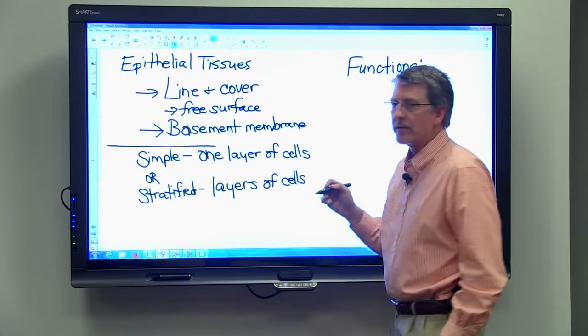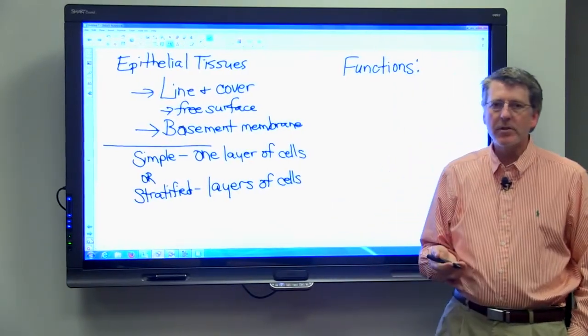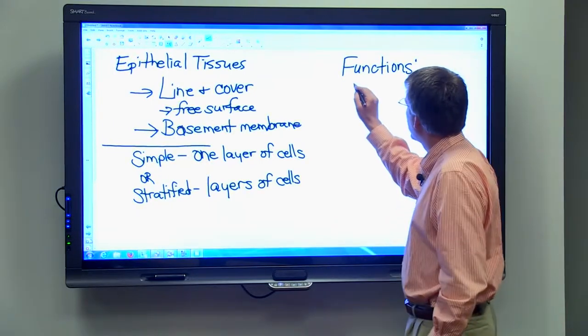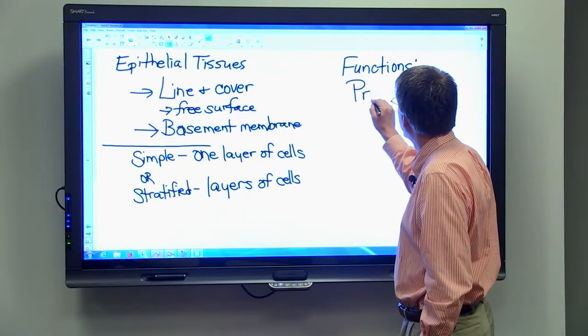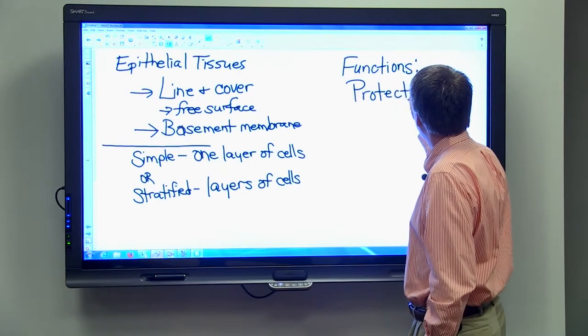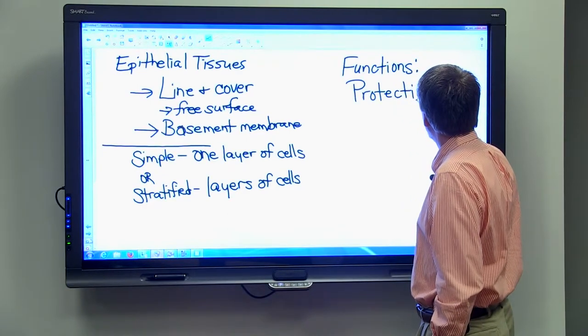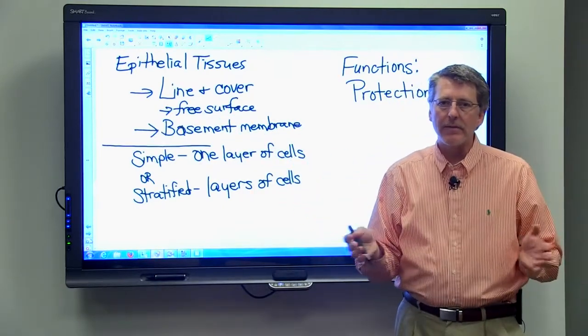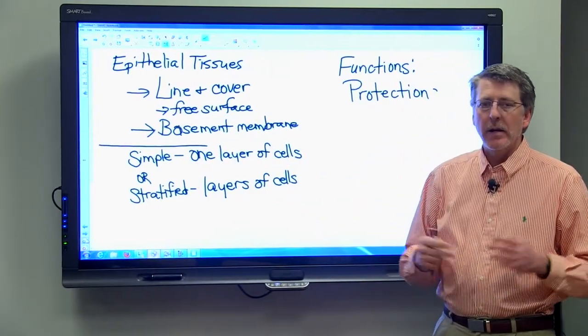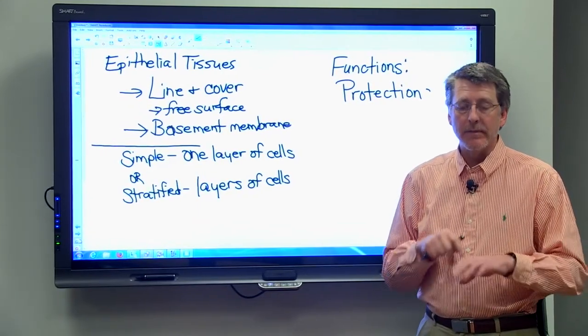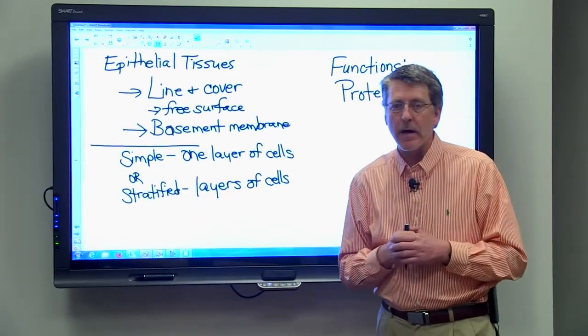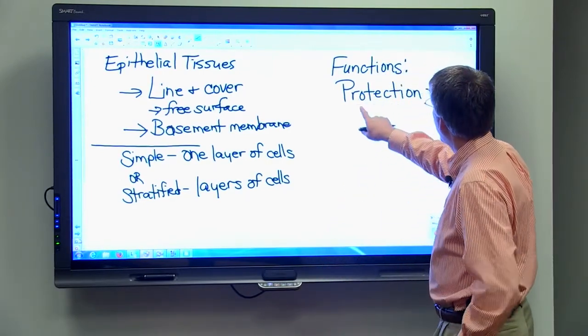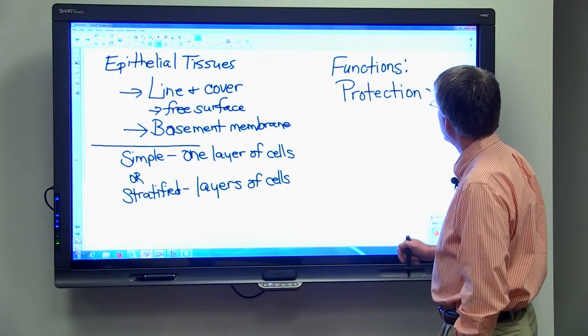Let's think about some functions of epithelial tissues, just some general kinds of things that epithelial tissues do. One thing epithelial tissues may do is they may be involved with protection. It makes sense that if they line and cover the body surfaces we have to have some sort of protection there. That's often what we call the first barrier of defense. If an organism gets inside of your body, it has to do so by crossing some membrane and that's where epithelial tissue comes in.